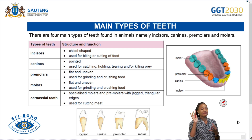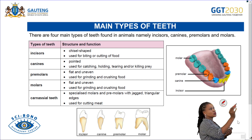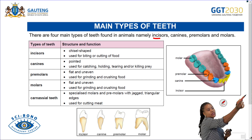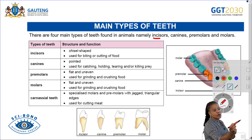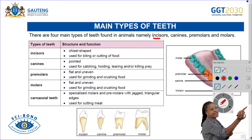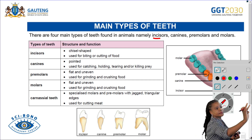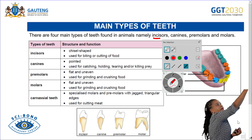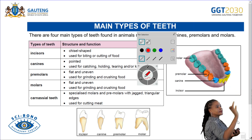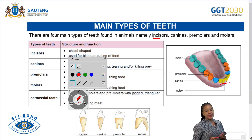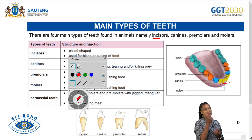There are four different types of teeth. The first are the incisors. Looking at the diagram, we can see the incisors — these are the incisors, usually found in front of our mouth.